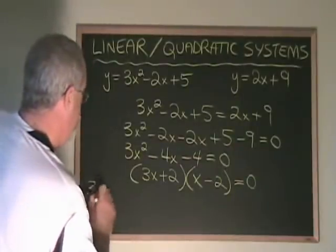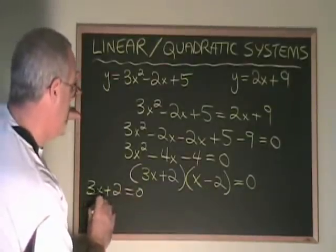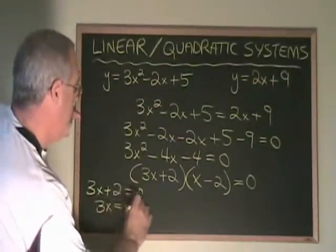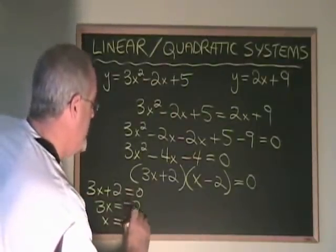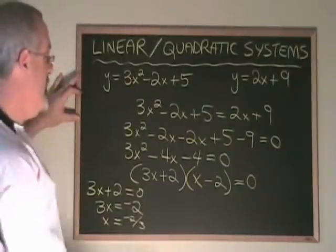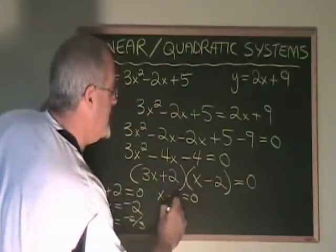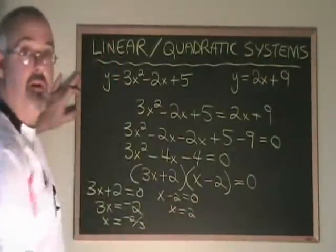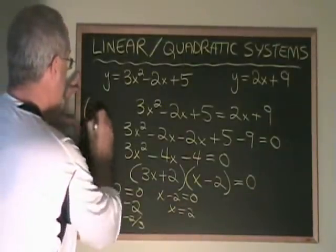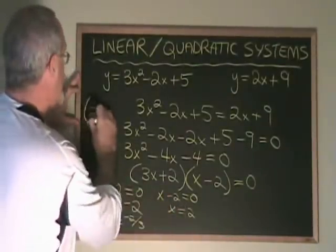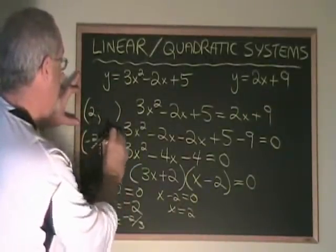3x plus 2 equals 0 simplifies to give us 3x equals negative 2. X is therefore equal to negative 2 thirds. x minus 2 equals 0 simplifies to x equals 2. We have the x-coordinates of both of the points of intersection. x equals 2 is one of them and x equals negative 2 thirds is the other.